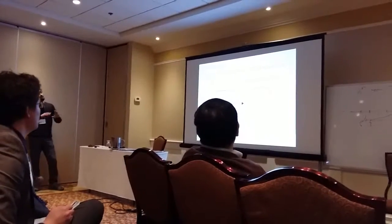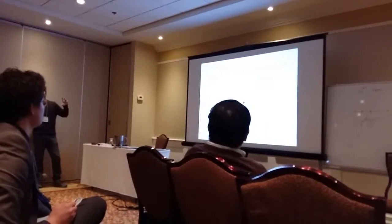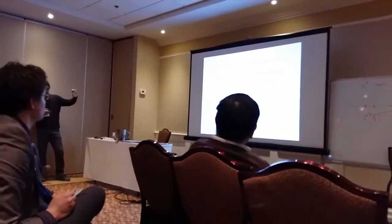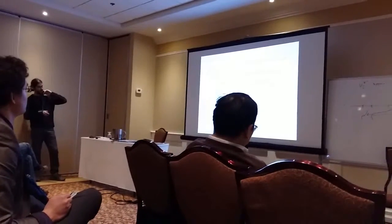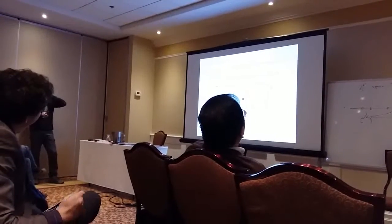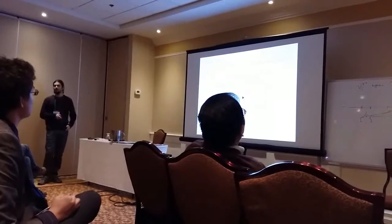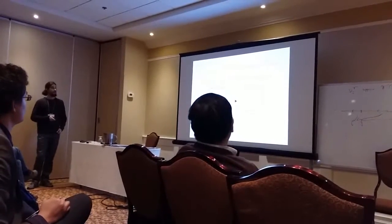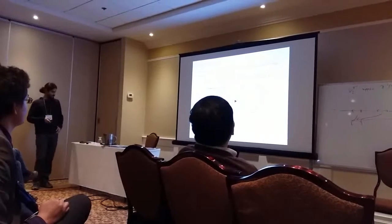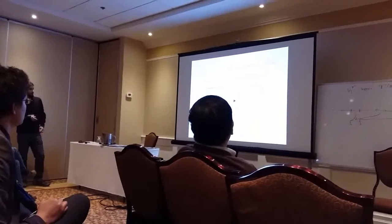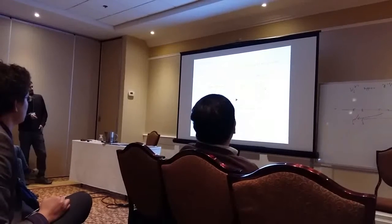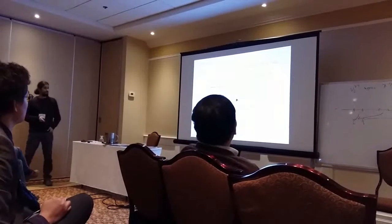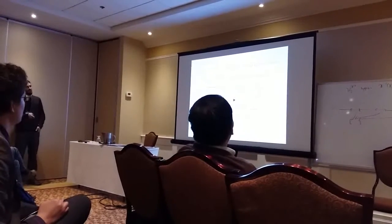To define Assouad dimension, we do something similar, but instead of starting with the unit cube we pick any sub-cube Q. We look at the intersection of that sub-cube with the set, divide the sub-cube Q into E sub-sub-cubes, and count the number of cubes that intersect the set. We do that for any sub-cube contained in the unit cube, and take the maximum over all the counting quantities obtained by moving the cubes in the unit cube. The Assouad dimension is given by the exponential growth rate of this maximum quantity.